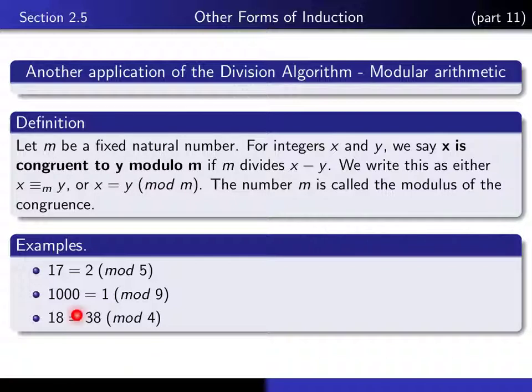Now look at this last one, and let's look at it in a different way. Instead of subtracting 18 minus 38, divide each of 18 and 38 separately by 4, and observe what the remainder is. 18 divided by 4 is 4, with a remainder of 2, and 38 divided by 4 is 9, with a remainder of 2 also. So I claim that it's not an accident that that happened.